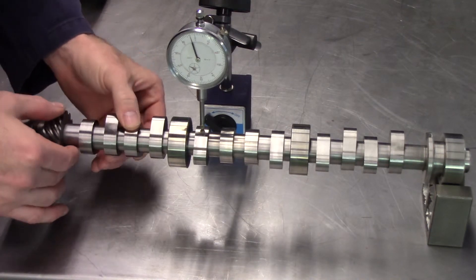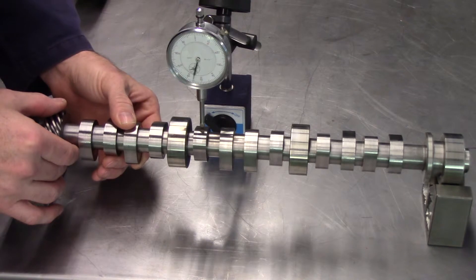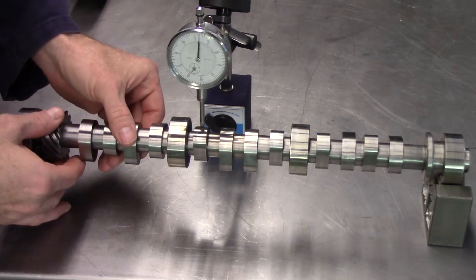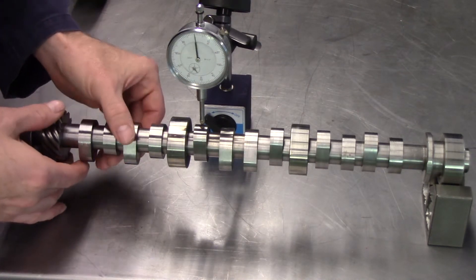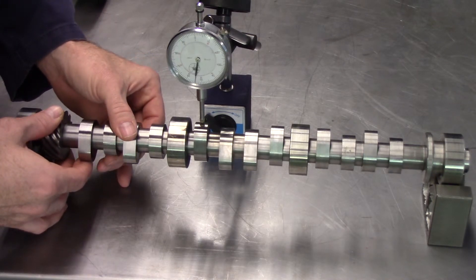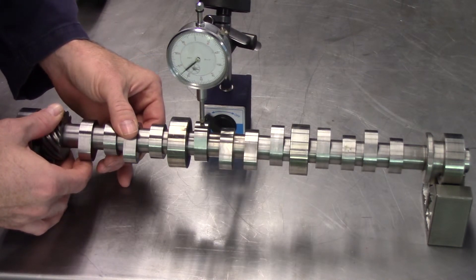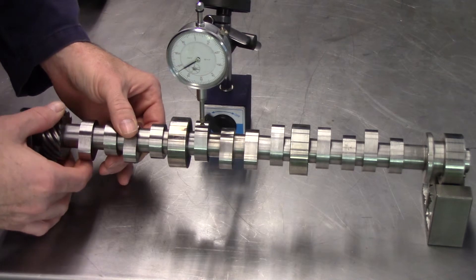Note that the needle rotates completely around the gauge face multiple times. Account for that in your measurement total. In this example, the measured cam lobe lift is 267 thousandths of an inch.